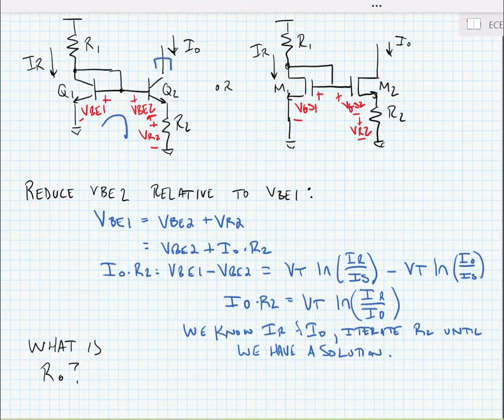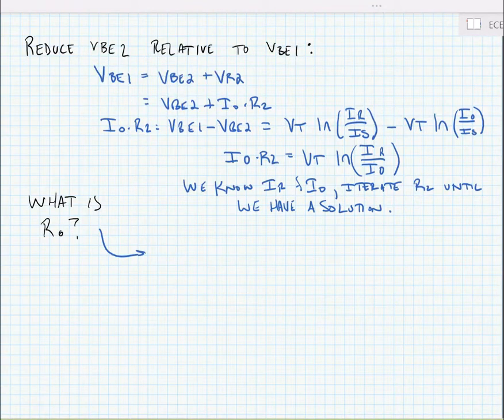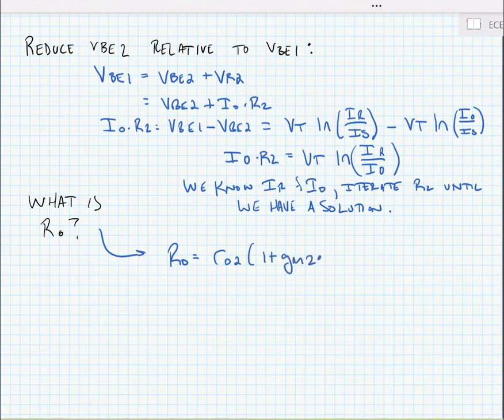What is the output resistance of the Widlar current source? We've added a resistor to either the emitter terminal for the BJT or the source terminal for the MOSFET device, so ROUT equals RO2 times (1 plus gm2 times R2). This is positive—because we've added this resistor, we've increased the overall output resistance, making it a better current source.